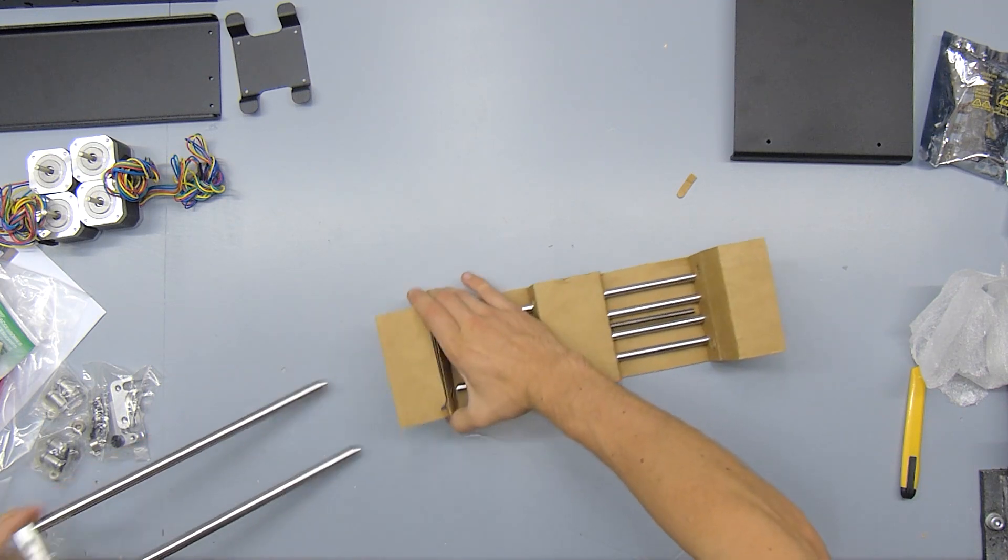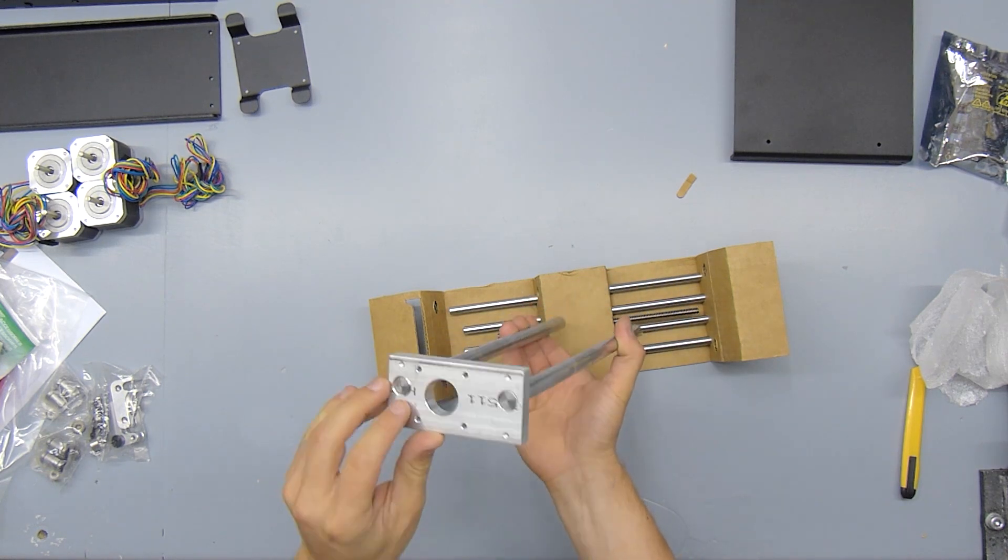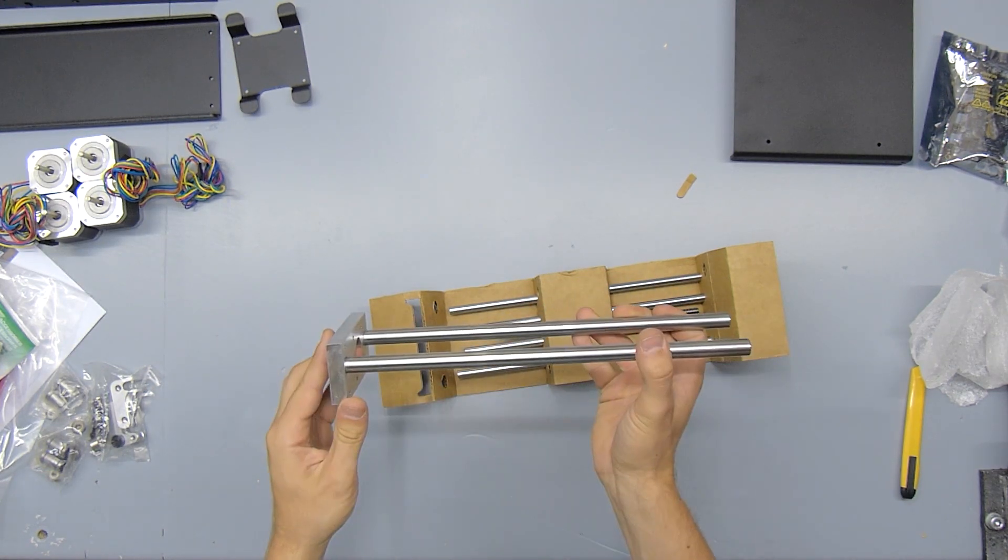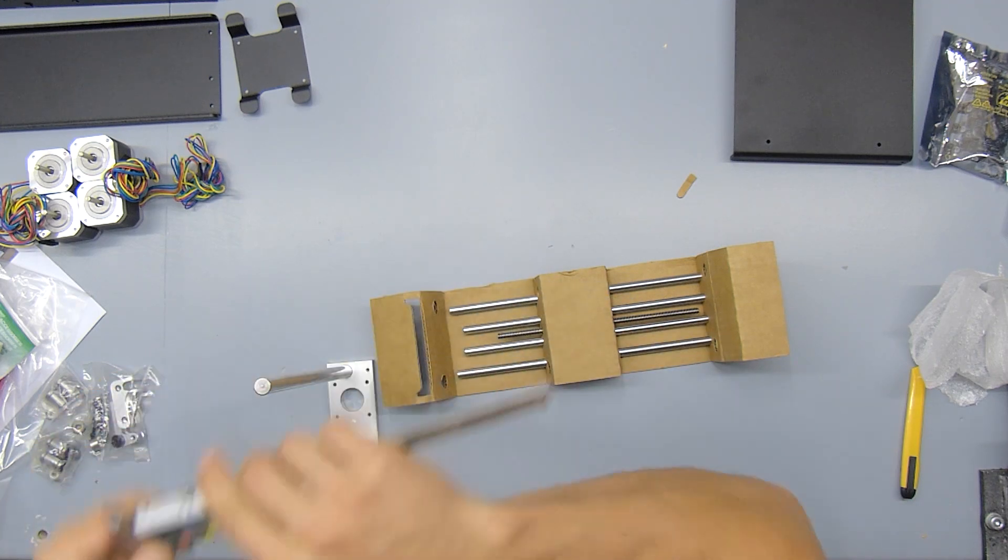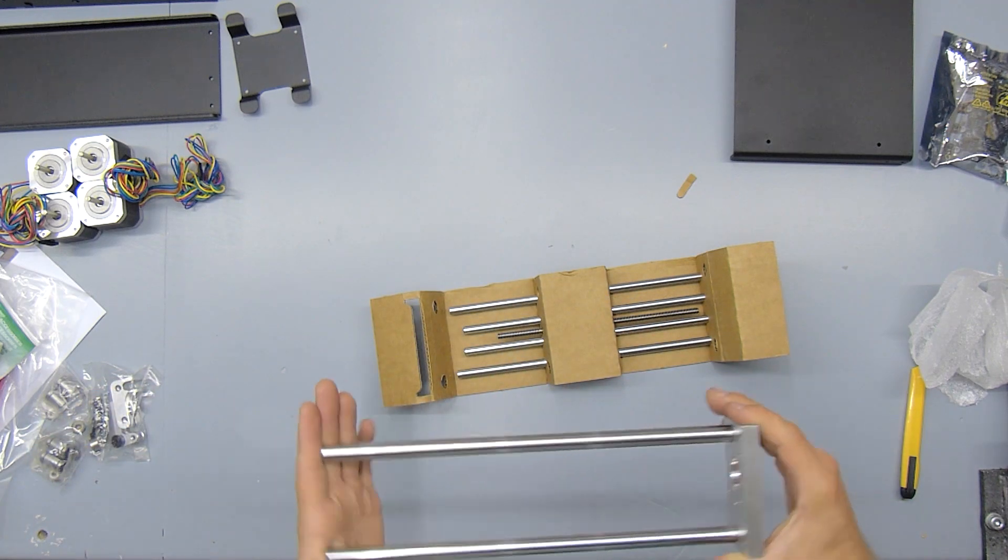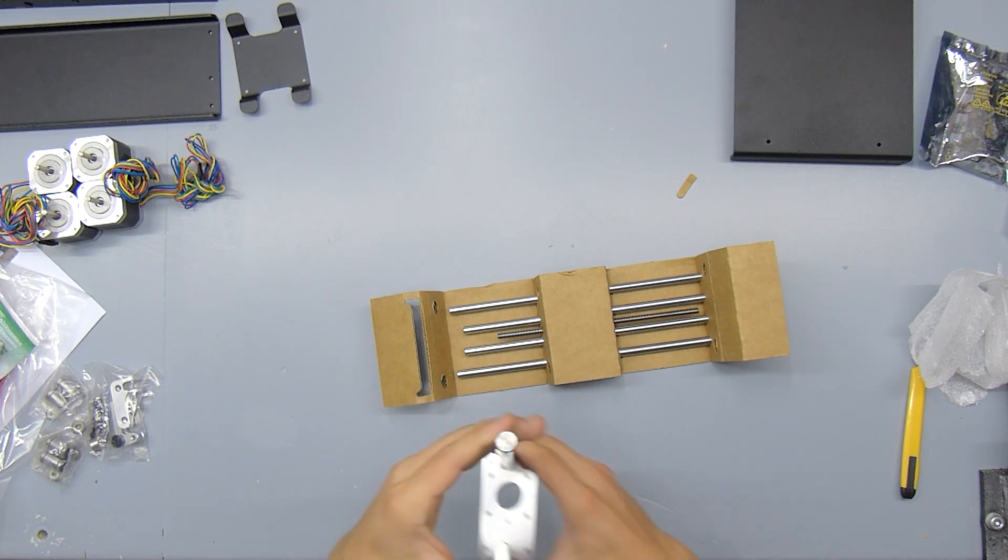So let's look at the linear rails here. These are the Z-rails, and these are actually fairly fat rails pressed into an aluminum block, and these are 12mm rods. Really nice quality, there's nothing going to bend there.